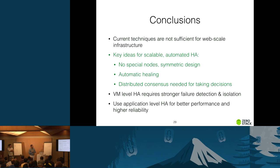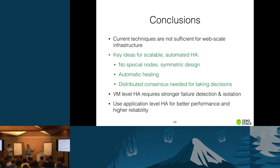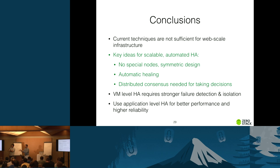To conclude: current standard HA techniques work for small use cases but don't scale well for web-scale architectures. The key ideas for scalable HA are: no special nodes (symmetric design), automatic healing, consensus-based decision making, VM-level HA for better failure tolerance with good detection and isolation, and app-level HA for better performance and reliability. Feel free to visit us at booth T43 for more detail. Thank you.